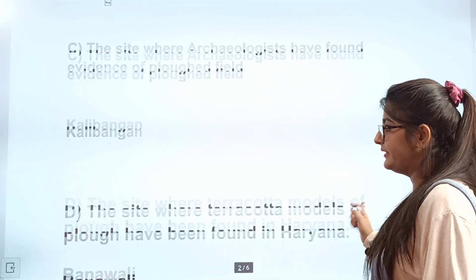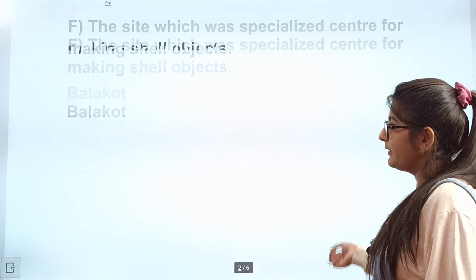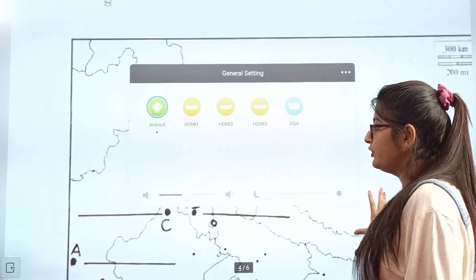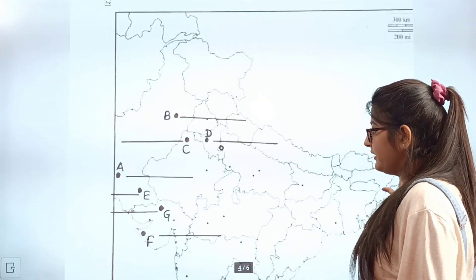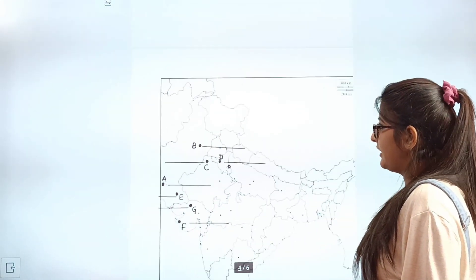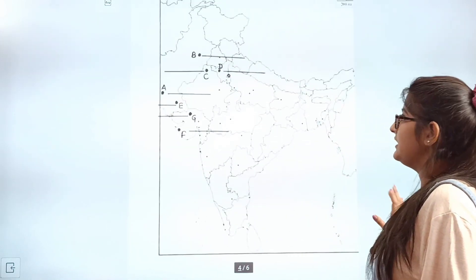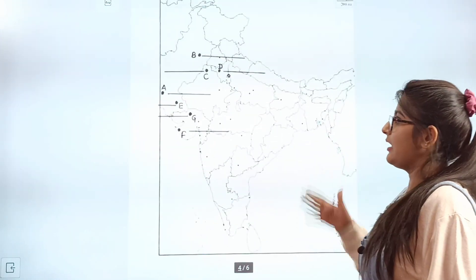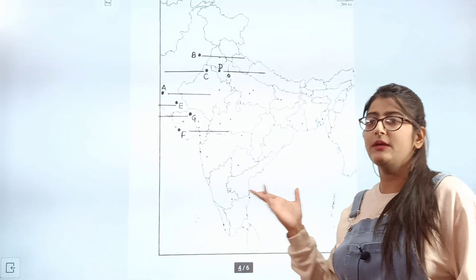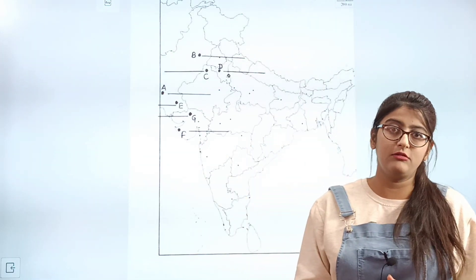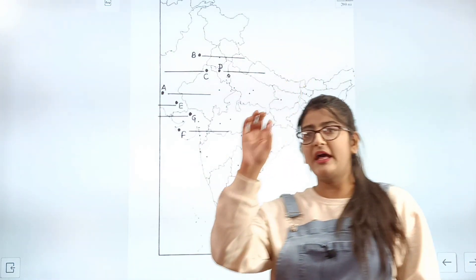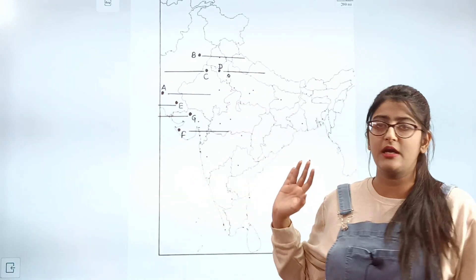I am going to show you a map, but in a slightly different style — I will ask you questions. This is a map and here are places marked A, B, C, D, E, F, G. These are mature Harappan sites and there are questions based on their locations. We will answer them directly and then mark them on the map.